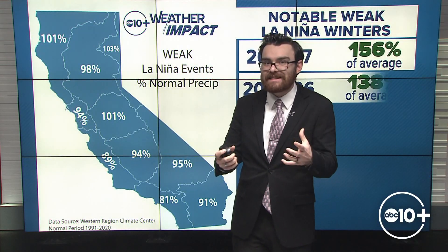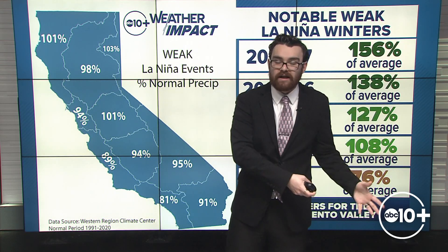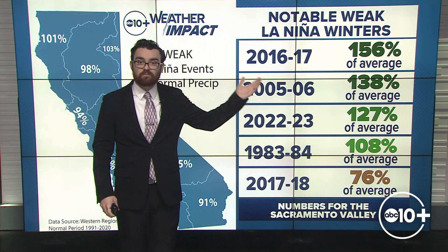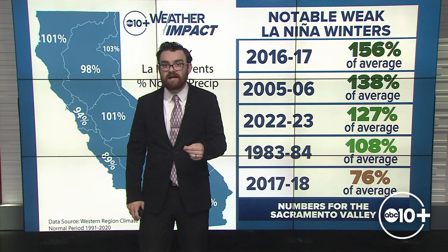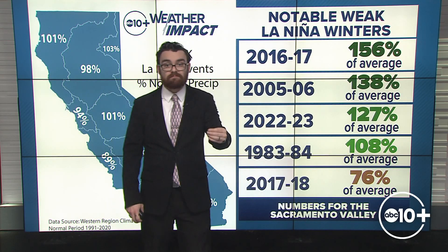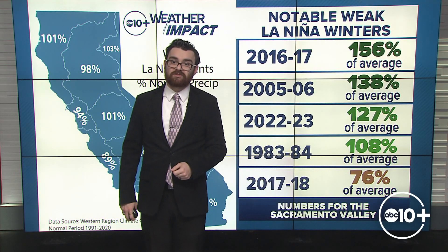This is where we get the idea that El Niño years are wetter than average and La Niña years are drier than average. But there have been some notable weak La Niña winters that were actually pretty wet. 2016-17 was 156% of average precipitation — that was a drought-busting year in California, and 22-23, the most recent drought-busting year, was also a weak La Niña. So those came in wetter than average.